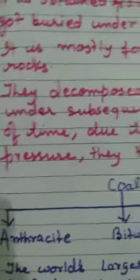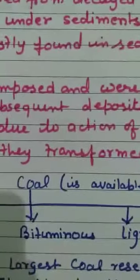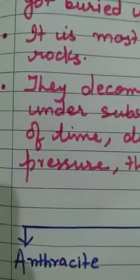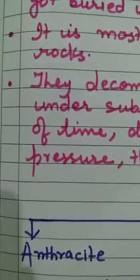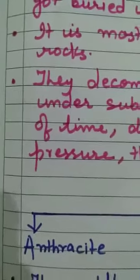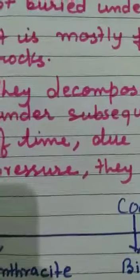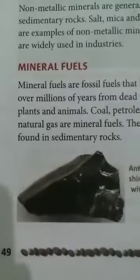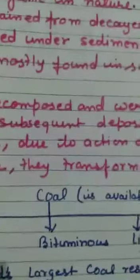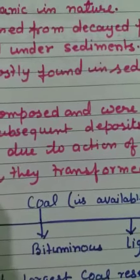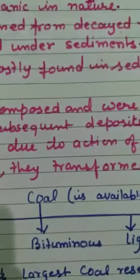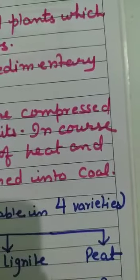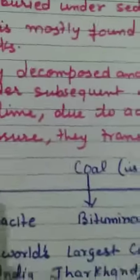Coal is available in four varieties: anthracite, bituminous, lignite and peat. Anthracite is the finest quality of coal with about 90% carbon. Here is a picture of anthracite. Bituminous is the most widely available variety, while lignite and peat are inferior varieties of coal.